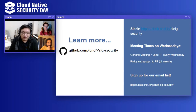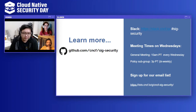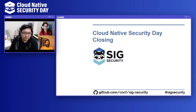So with that, I'm going to wrap up this part of the closing. Everything is on GitHub — if you remember one thing, just go to the CNCF SIG security GitHub repository. Our meeting time is on Wednesday, and we have a Slack link which is part of the CNCF Slack. Don't forget to sign up for the mailing list. All right, Emily, back to you.